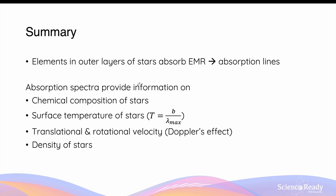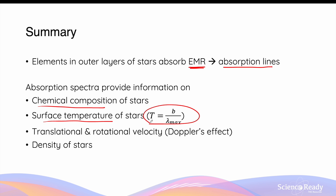In summary: elements in the outer layers of stars absorb EMR, producing absorption lines in the star's spectrum. These absorption spectra provide information on chemical composition (elements present), surface temperature via Wien's displacement law, translational and rotational velocity of the star, and the star's density. This concludes the video on spectrum of stars.